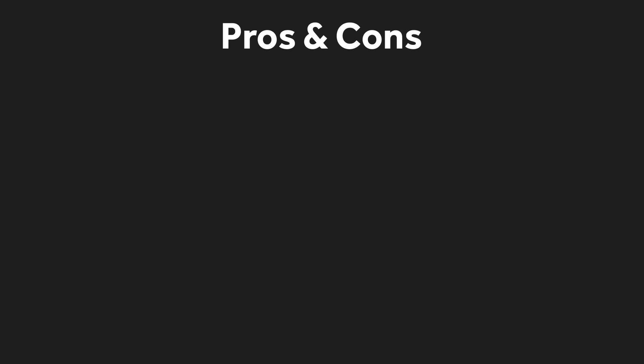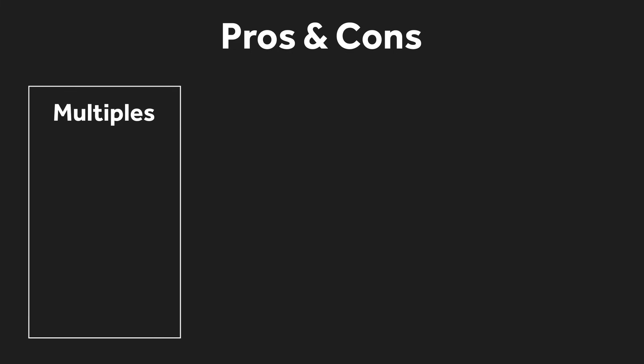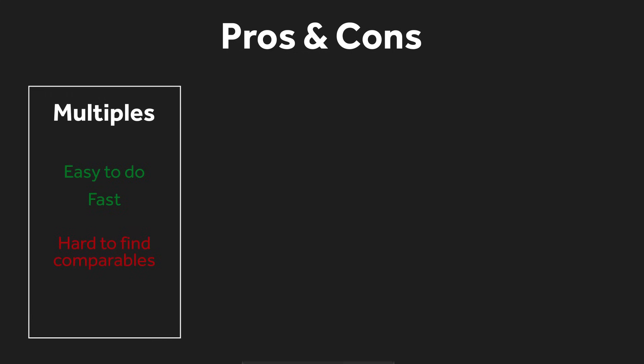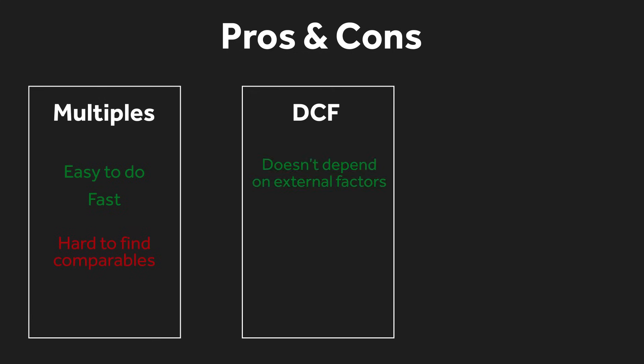Now let's look at the pros and cons of each method. Starting with the multiples approach: a big pro is that it's quite intuitive, easy to understand, and relatively easy to do. On the con side, it's not always easy to find truly similar companies. For instance, if you're trying to value Amazon, there aren't many companies of the same size, geography, and e-commerce focus. Comparing it to Walmart, for example, isn't ideal since Walmart is more focused on physical stores.